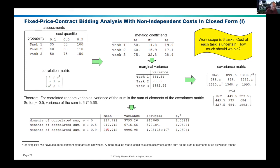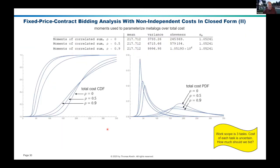Taking that set and parameterizing your metalog over the sum in three cases — rho equals zero, 50%, and 90% — you can see that the rho equals zero case is the same one as for independence, but it's a fatter distribution over here on the right if you have correlation. And if correlation is very high, then of course you get a wider distribution yet.